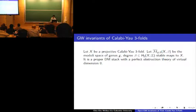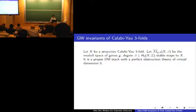So this moduli space parametrizes morphisms from possibly nodal genus g projective curves to X, such that the push-forward of the fundamental class of the curve is the second homology class beta of X. Since we are in a projective situation, we can use the algebraic definition.